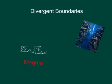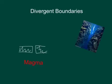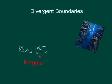At divergent boundaries, there are two plates that are driven apart from each other by the magma underneath. This magma is driven by convection currents within itself. Cooler magma up top sinks down, or the warmer stuff up top cools and sinks down towards the bottom of the mantle where it warms up and rises back to the top.